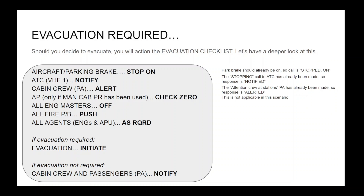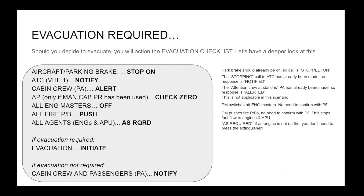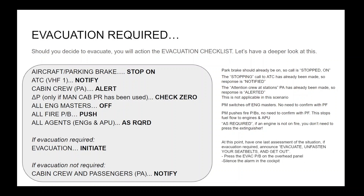All engine masters — off. The PM switches off engine masters with no need to confirm with PF. All fire push buttons — push. PM pushes fire push buttons with no need to confirm with PF. This stops fuel flow to engines and APU. All agents, engines and APU — as required. If an engine is not on fire, you don't need to press the extinguisher, as this can cause further and unnecessary long-term damage to the engine or APU. If evacuation is required — evacuation — initiate. At this point, pause and have one last assessment of the situation. If evacuation is required, announce: 'Evacuate, evacuate, unfasten your seatbelts and get out.' Press the EVAC push button on the overhead panel.